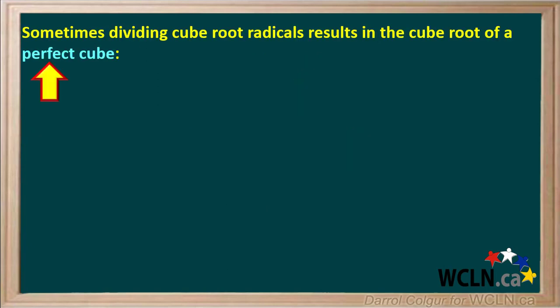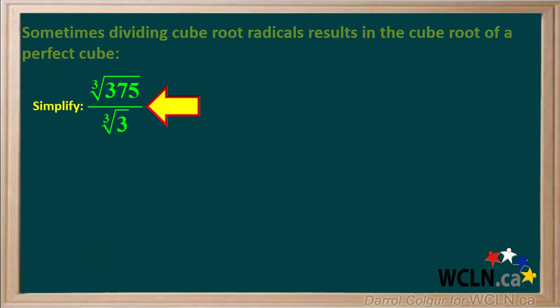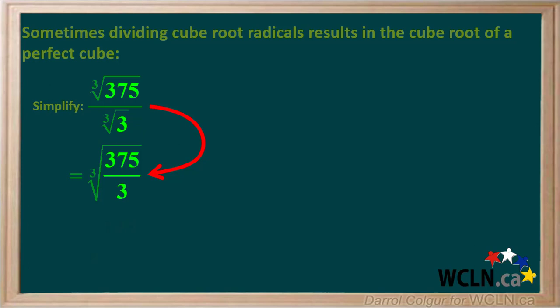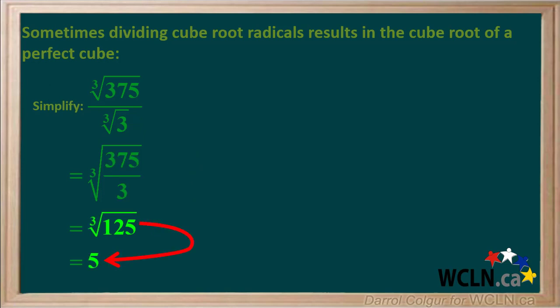Sometimes dividing cube root radicals results in the cube root of a perfect cube. For example, we are asked to simplify the cube root of 375 divided by the cube root of 3. The cube root of 375 divided by the cube root of 3 equals the cube root of 375 over 3. 375 over 3 equals 125, and the cube root of 125 is 5.